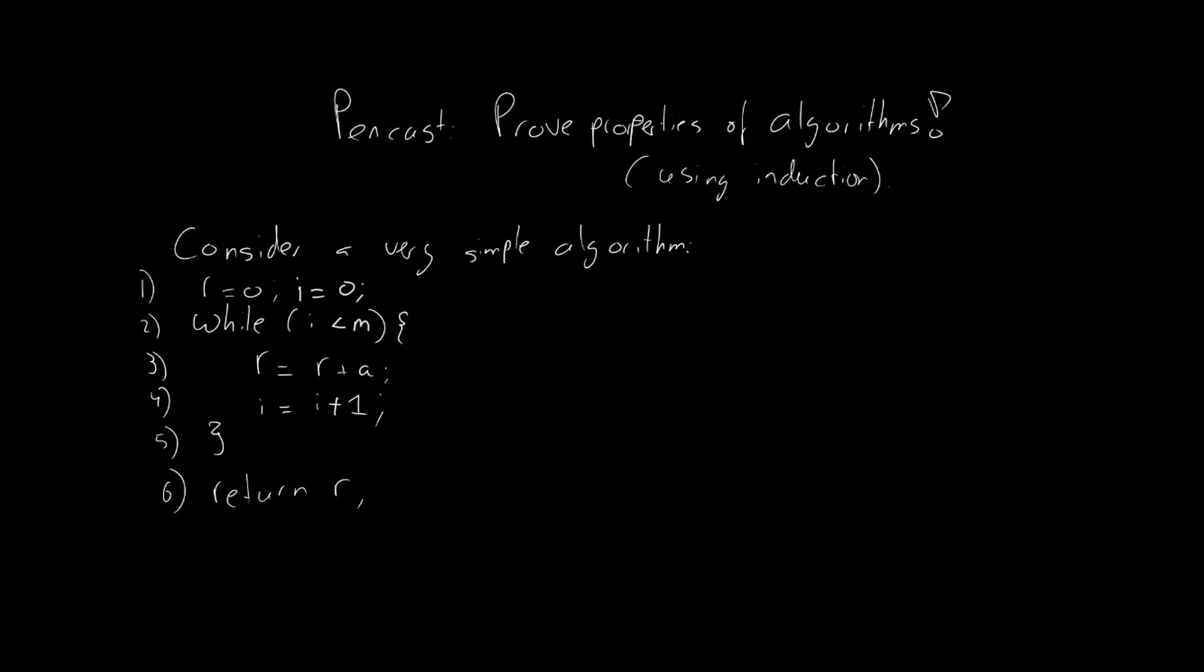Now, when proving correctness of these algorithms, we need to consider four steps in our proof. Step number one is what we would call the basis property. It's comparable to the base case of an induction proof. Step number two is the inductive property. Well, that's similar to the inductive case in an induction proof.